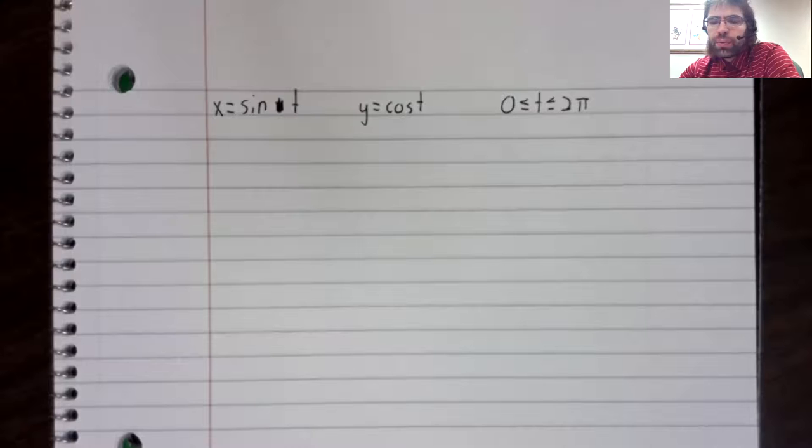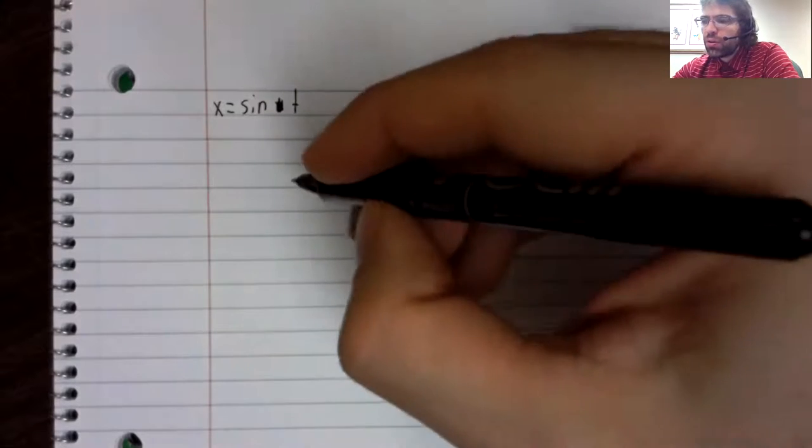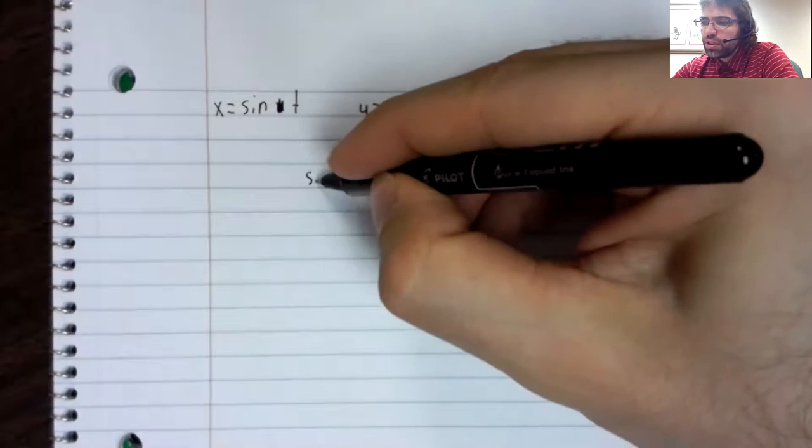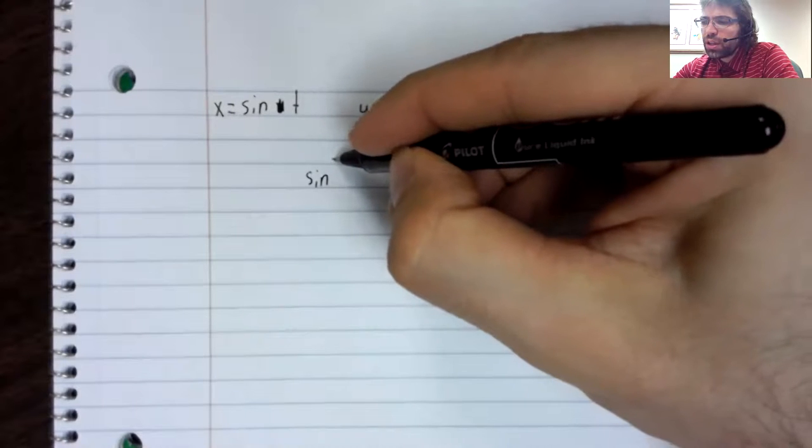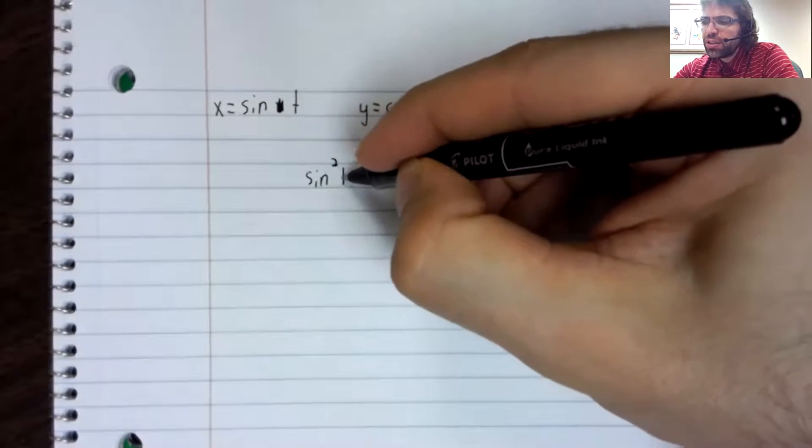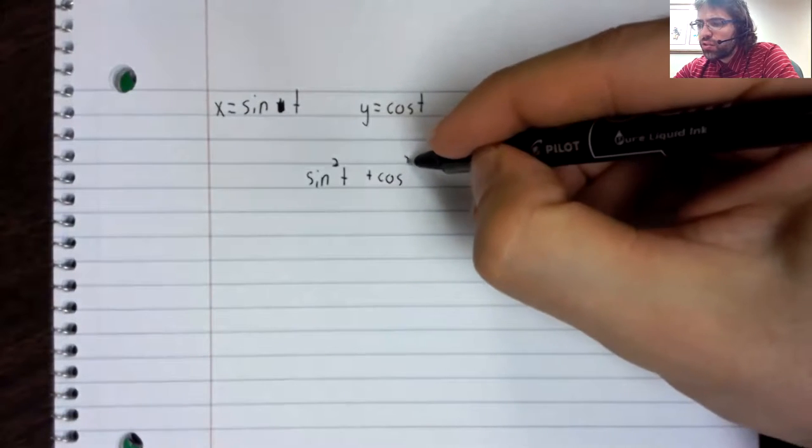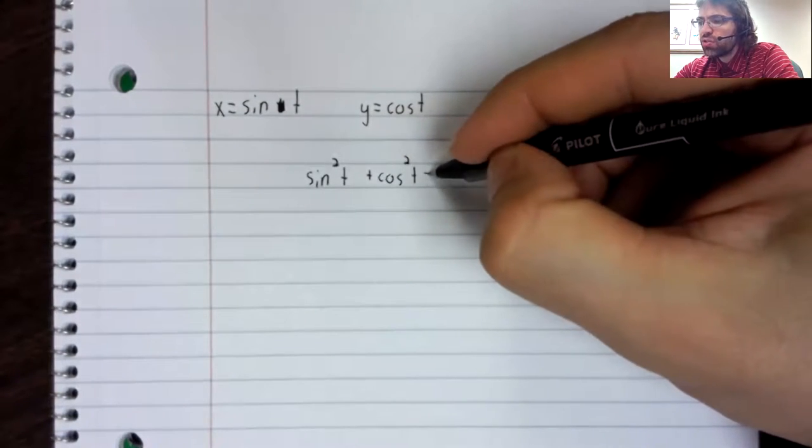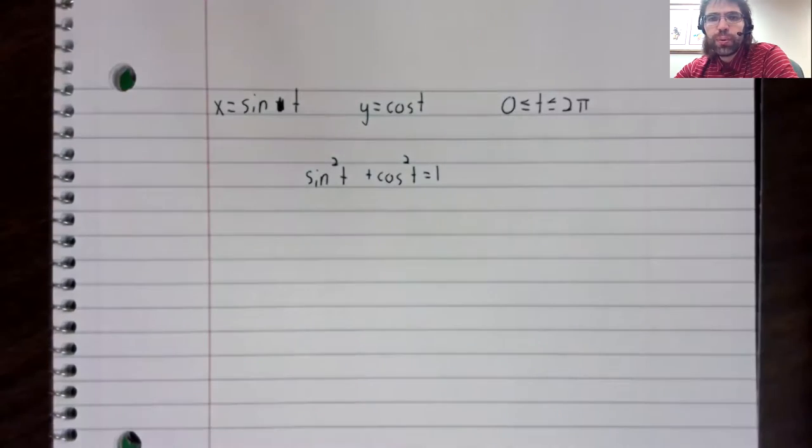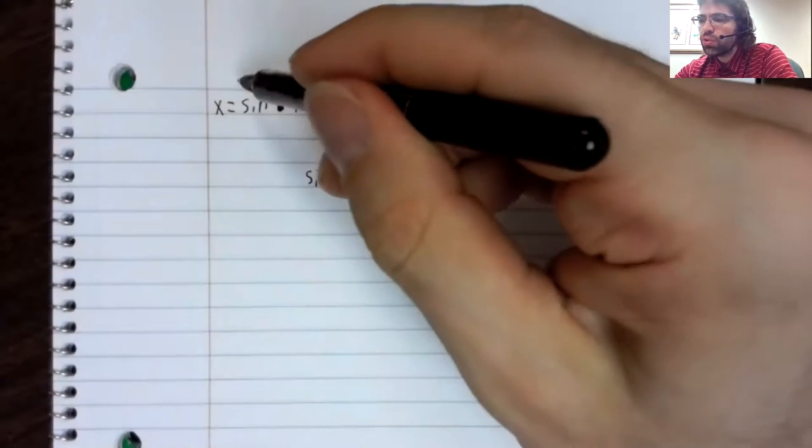And what we're going to observe is that according to the Pythagorean identity, the sine squared plus the cosine squared equals one.